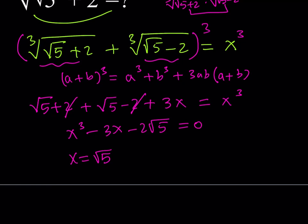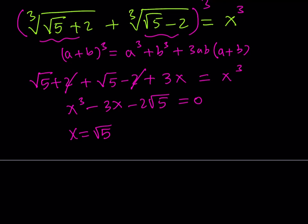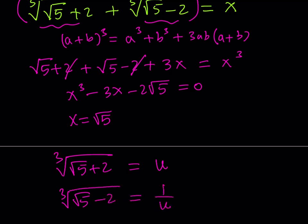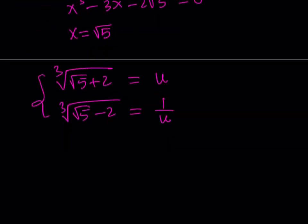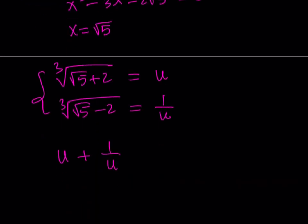Now, what does it mean when x equals square root of 5? There's another important fact: when we multiply the two cube root expressions we got 1. So if you call the expression we're trying to find u, then the other expression with the minus sign is just the reciprocal — because their product is 1. When two things multiply to 1 they're called reciprocals, so that is 1 over u. We know they add up to x, which is square root of 5, so u plus 1 over u equals root 5.